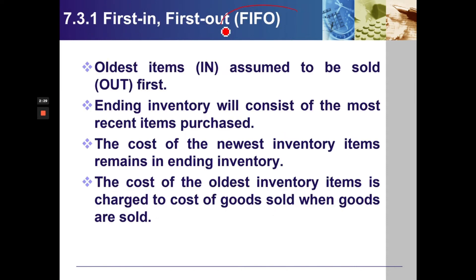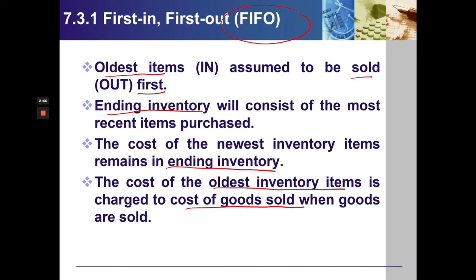First In, First Out (FIFO). The oldest items are assumed to be sold first. Ending inventory will consist of the most recent items purchased. The cost of the newest inventory items remains in ending inventory. The cost of the oldest inventory items is charged to cost of goods sold when goods are sold.